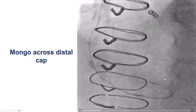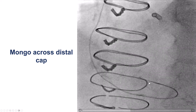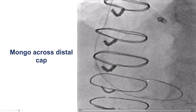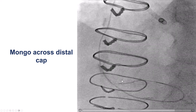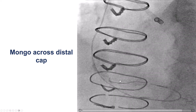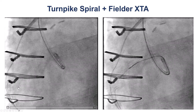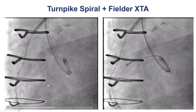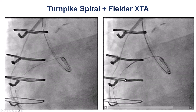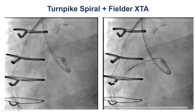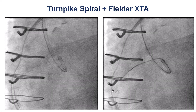We were able to advance the microcatheter to the distal cap. We then used the Gladius Mongo guidewire again, which was able to penetrate through the distal cap and is now moving along the distal right coronary artery. With the Mongo in the mid-right coronary artery, we came antegrade with a Turnpike Spiral and a Fielder XTA guidewire, which appears to be going extraluminal and is very close to the retrograde guidewire.